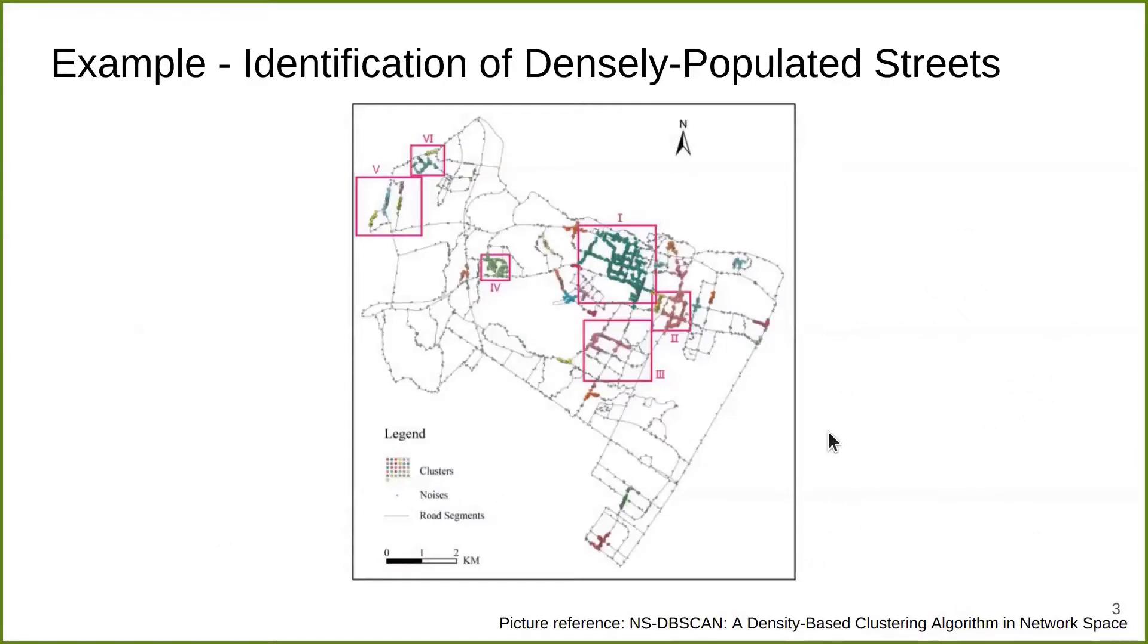This is a more specific example of how a DBSCAN-like algorithm can be helpful in a real-world scenario. This is a dataset of a street map, where each data point is coordinated where people live or move. The goal is to identify the densely populated regions on the street map. The cloud regions are clusters identified by the DBSCAN-like algorithm. These clusters are all very arbitrary shape. And these black regions, although containing data points, are not identified as clusters because they are not dense enough.